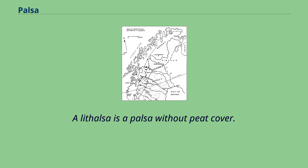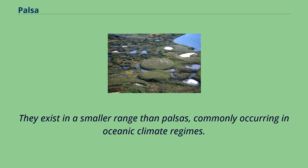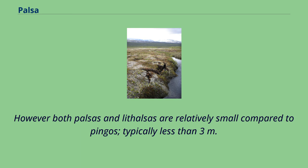A lithalsa is a palsa without peat cover. They exist in a smaller range than palsas, commonly occurring in oceanic climate regimes. However, both palsas and lithalsas are relatively small compared to pingos, typically less than 3 meters.